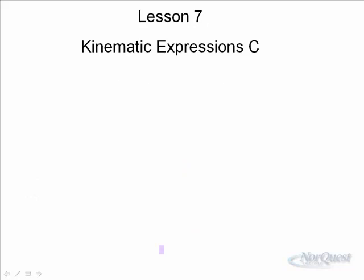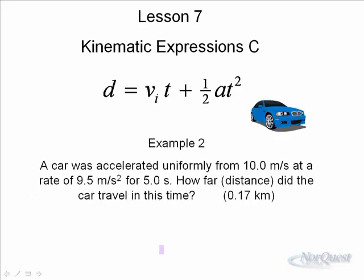Continuing along, same equation. Example number two. A car was accelerated uniformly from 10 meters per second, initial velocity, at a rate of 9.5 meters per second squared, acceleration, for five seconds. How far? What was the distance? We're looking for d.